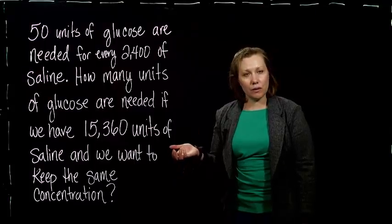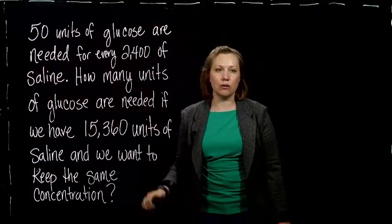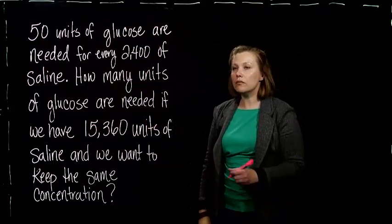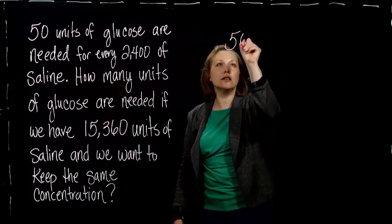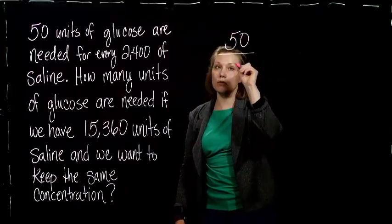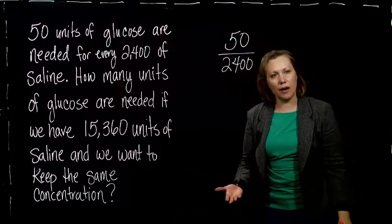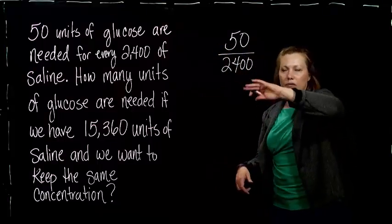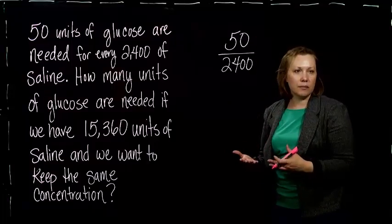Well, what we can do is set up a ratio for the units of glucose to units of saline. So it's 50 units of glucose to every 2,400 units of saline. So I put glucose on the top and saline on the bottom. You could have done it the other way - you could have put the saline on the top and the glucose on the bottom. It doesn't matter.